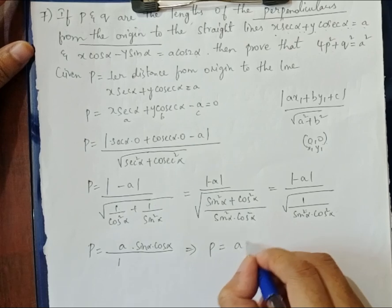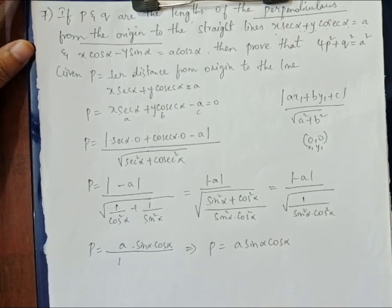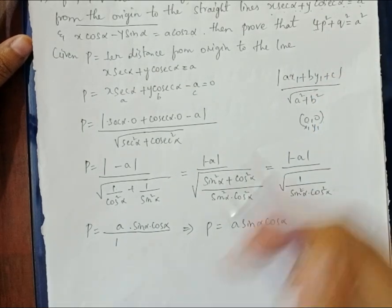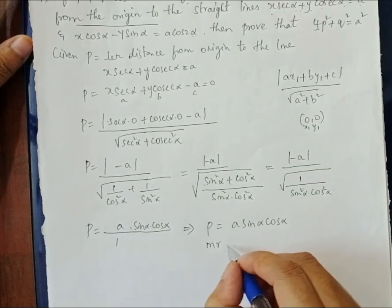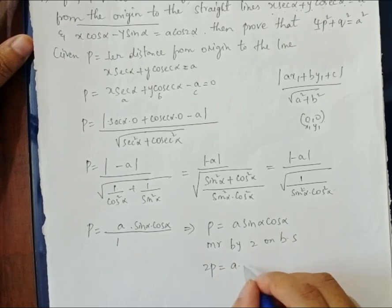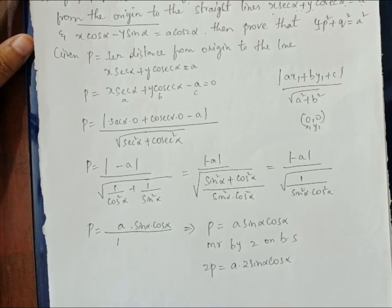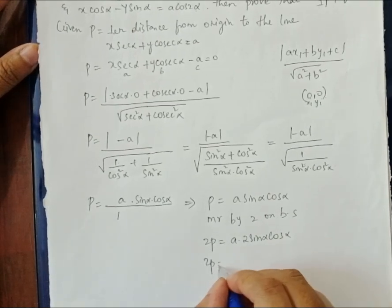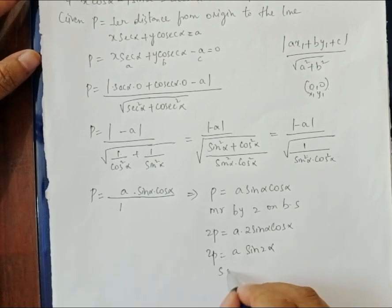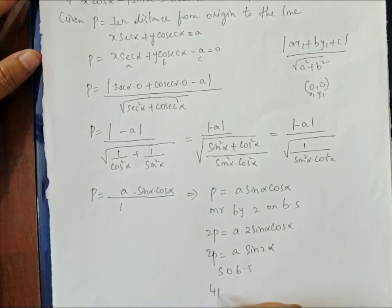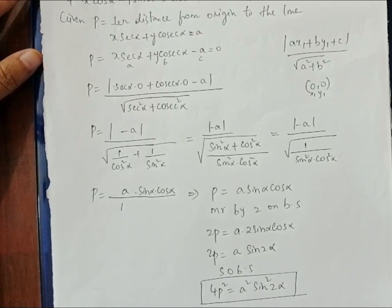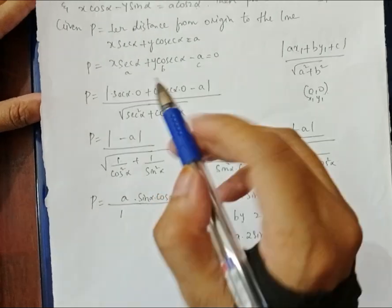Since the question asks for 4p², we multiply both sides by 2: 2p = a·2sin(α)cos(α) = a·sin(2α), using the double angle formula. Squaring both sides: 4p² = a²·sin²(2α). This is the value of 4p².